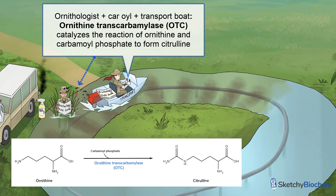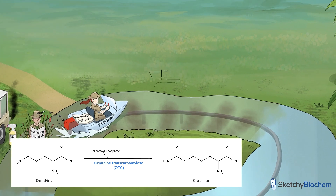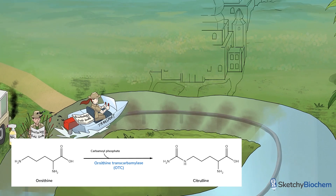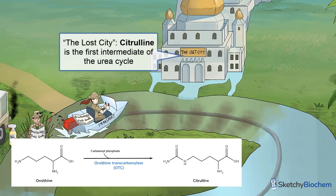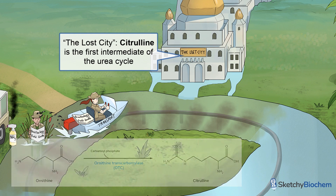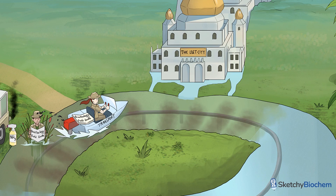Ornithine transcarbamylase transfers carbamoyl onto ornithine to make citrulline. This step also occurs in the mitochondria and is as messy as it looks. Please direct your gaze to the left where you'll see the eighth wonder of the world — that's the lost city of citrulline. Sorry about that. Let's continue our journey.